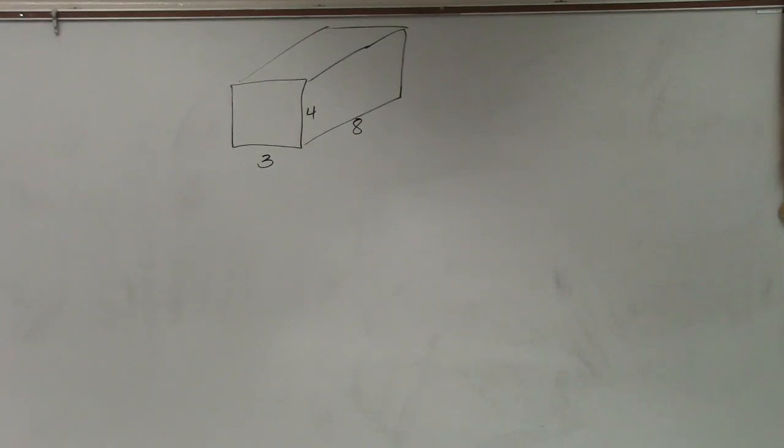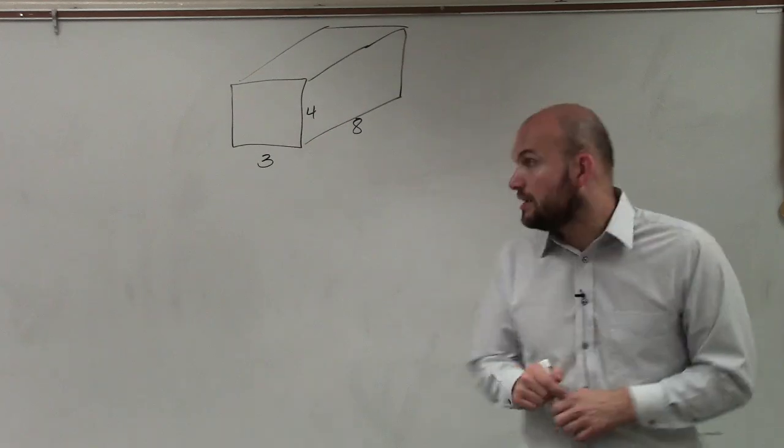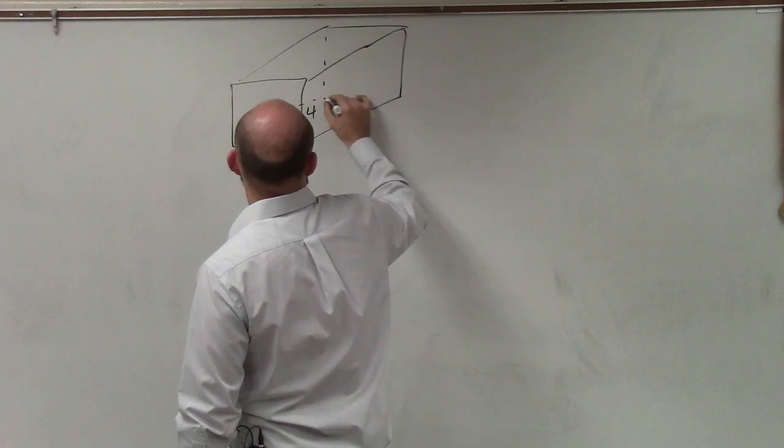All right, so what I'm going to show you guys how to do is find the lateral surface area. If you guys look at this rectangular prism, you guys can see that there are a total of six sides.